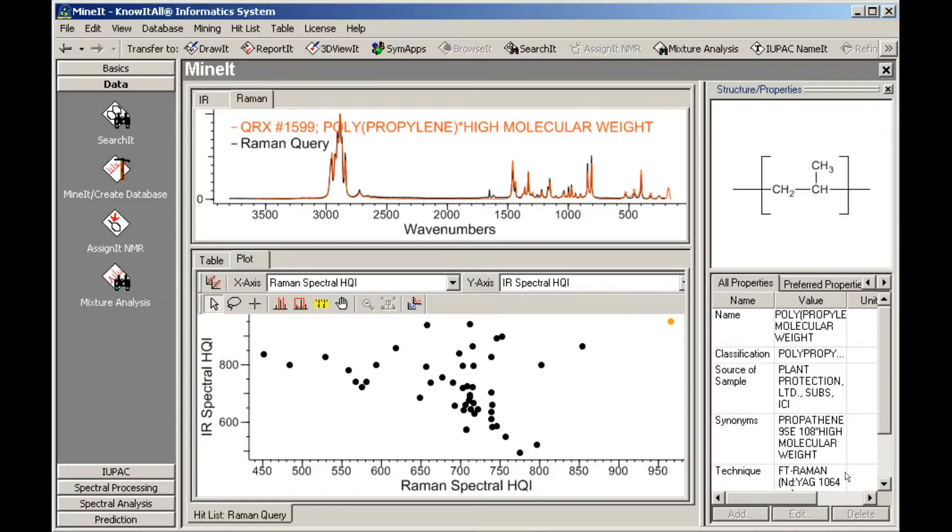The results are displayed in the Minit application. Because this is a multi-technique search, the results are automatically displayed in the database pane's Plot tab, where the HQI values for each spectral technique are plotted against each other.